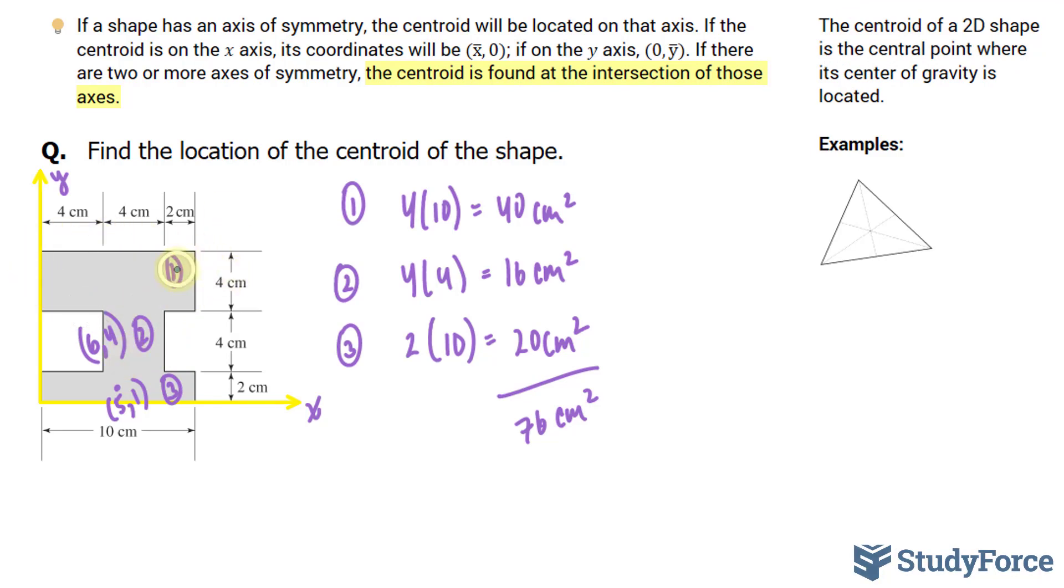And lastly, the centroid of this rectangle, the center point, will be 2 units along this dimension and 5 units along this dimension. So it's going to be 5 by, we said 2 over here, and it goes up all the way to 10. So 5 by 8 is the centroid.